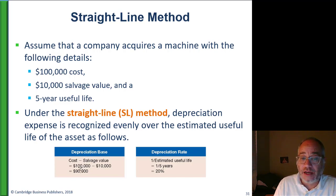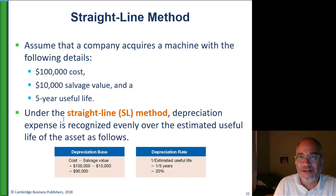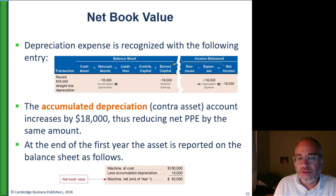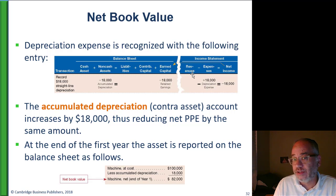So in this case, cost minus salvage value is $100,000 minus $10,000, or $90,000. The useful life is five years, so $90,000 divided by five equals annual depreciation of $18,000 a year. Under straight line, it'll be $18,000 every year.